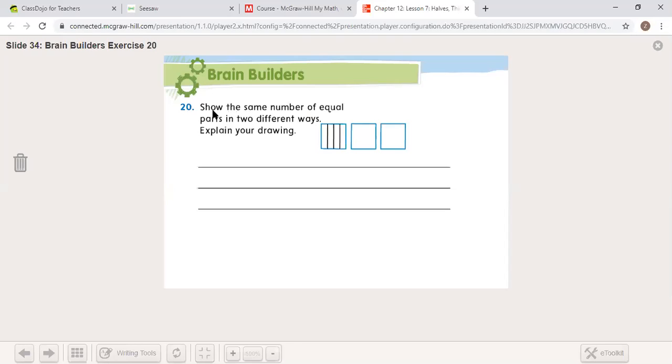The last brain builder. You don't have to write anything, but I want you to draw the same number of equal parts in two different ways. Here, they split the square into four equal parts or fourths vertically. How can you split the next two squares different ways into fourths?